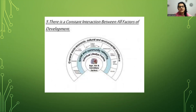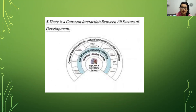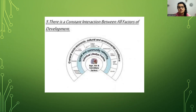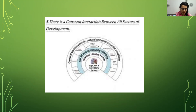There is a constant interaction between all factors of development. By all factors of development, we mean socio-economic, cultural, and environmental conditions. Everything — family, society, financial conditions, the food the child is getting — everything has a constant interaction with each other in the process of development.